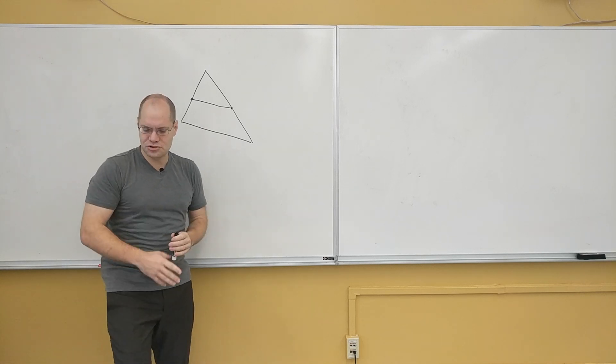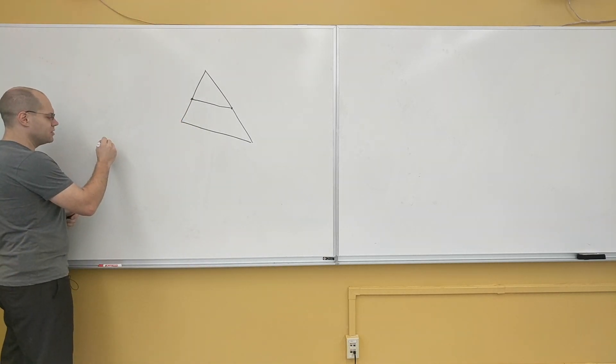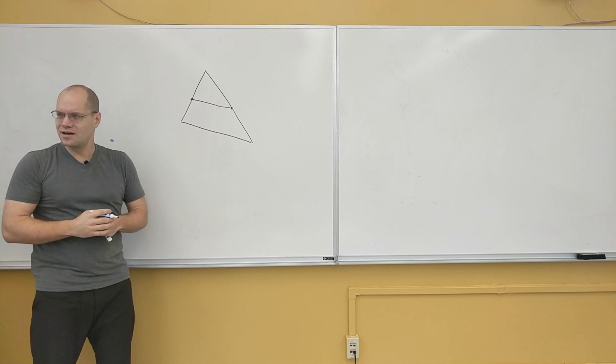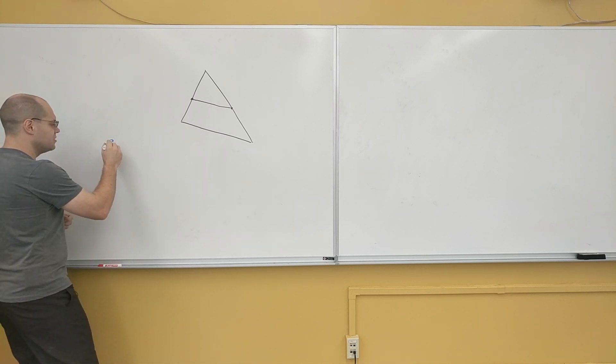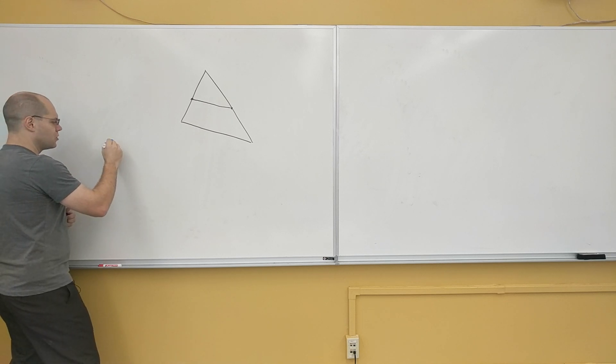Here we're going to do what we often do, which is pick an arbitrary point, call it the origin, and then point a vector to every vertex of the triangle from this so-called origin.